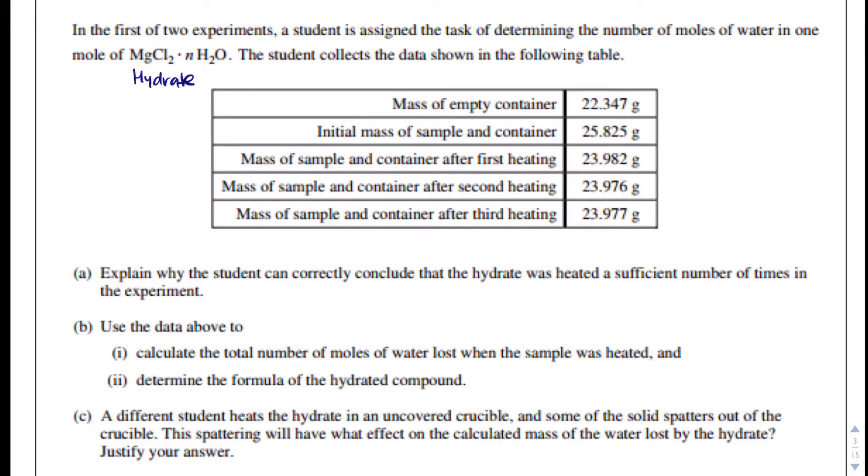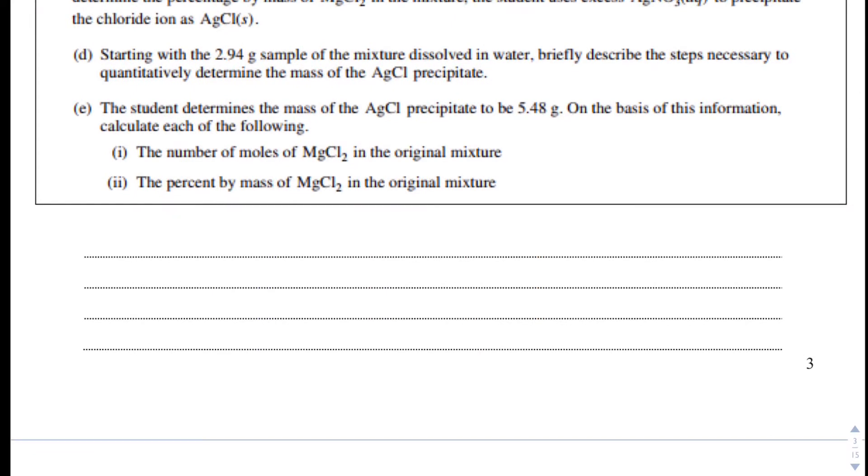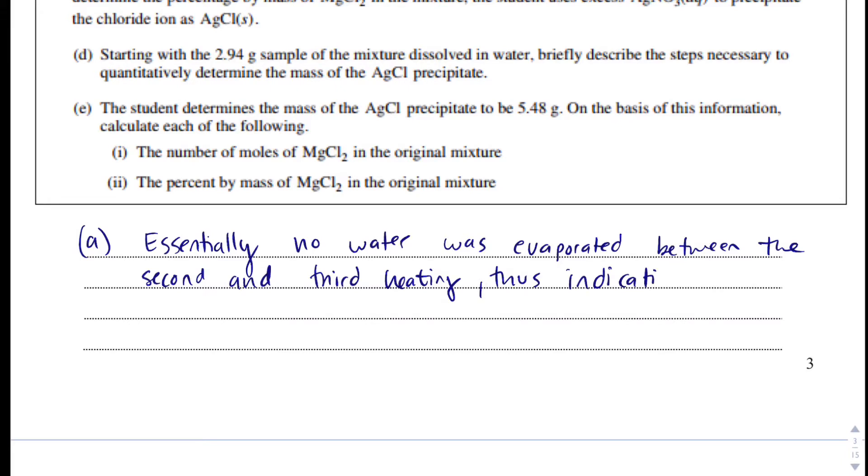The student collects the data, and it's in this table, and we can worry about that in just a minute. It says, explain why the student can correctly conclude that the hydrate was heated a sufficient number of times in the experiment. If I look at our sample, we have some sort of dish, a container. We add our sample to there. That causes the mass to go up, and then we heat it three times, and as we heat it, the mass goes down every time. And if you have performed a hydrate experiment, you know that we heat until we get a constant mass.